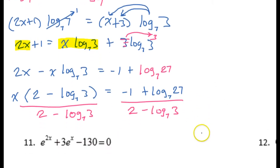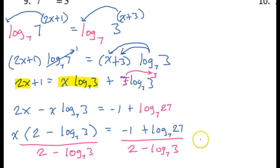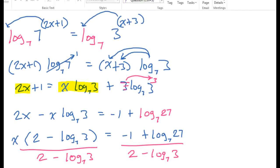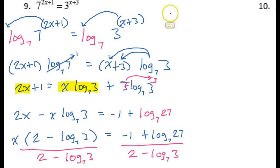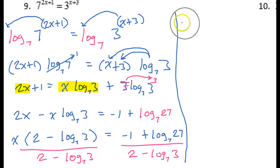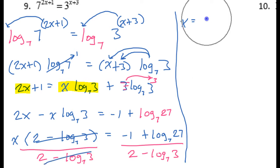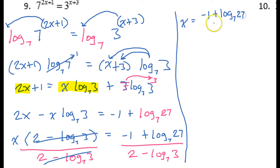And that's as far as I can go — that is really the final answer right there. So x equals negative 1 plus log base 7 of 27, over 2 minus log base 7 of 3.